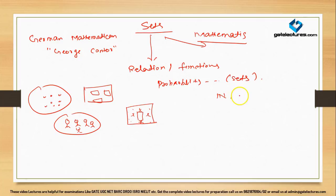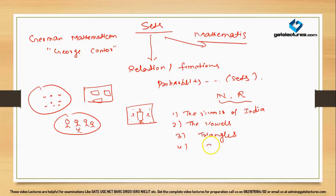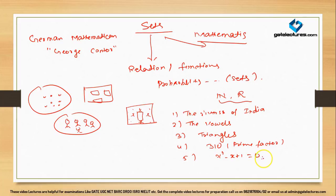For example: collection of natural numbers, collection of real numbers, collection of the rivers of India, the vowels in the English alphabet, various kinds of triangles, the prime factors of 310, and the solution of x² − 1 plus x² − x + 1 = 0. These are all collections of different types of sets.